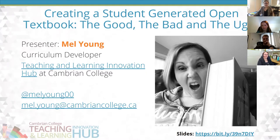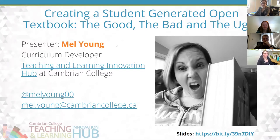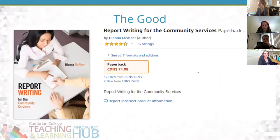Hi everyone! I created an open textbook with my community and justice service students last winter. I titled my presentation 'The Good, The Bad, and The Ugly.' It was my first time ever creating a textbook with students, and it came with a lot of good and a lot of challenge. So, the good — this is a textbook students were told they needed to buy for the course. I was pleased to see this $90 textbook is now on sale on Amazon for $75.